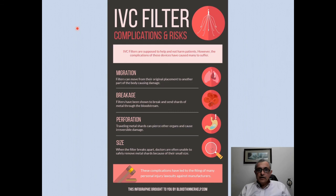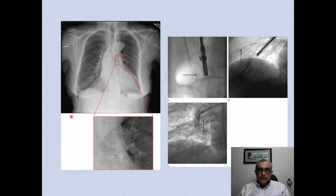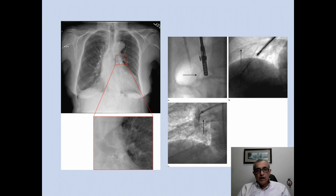IVC filters come with complications including migration, breakage, perforation through the walls of the inferior vena cava damaging adjacent organs, and thrombosis. Here is an example where the struts have broken and are lying in the pulmonary artery — they were snared out before causing perforation or thrombosis. IVC filters should not be left longer than necessary, and it is currently recommended they be removed as soon as adequate anticoagulation is achieved and the risk of PE is overcome.